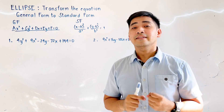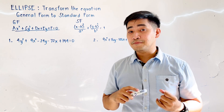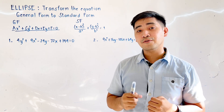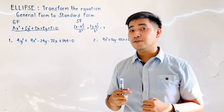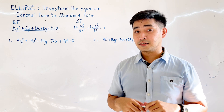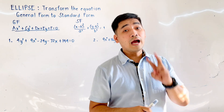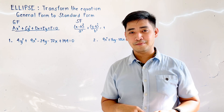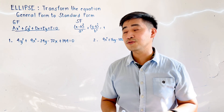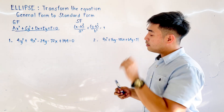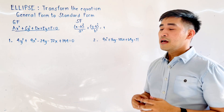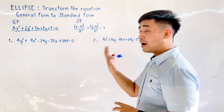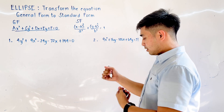Unlike in a parabola, where only one variable is being squared — for example, x² + 4y or y² − 7x — for an ellipse we have two variables. Therefore, we need to complete the squares of those two variables. Let's start with the first example: 4y² + 9x² − 24y − 72x + 144 = 0.